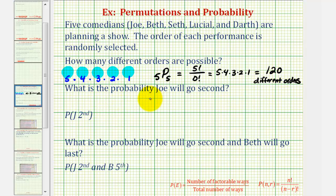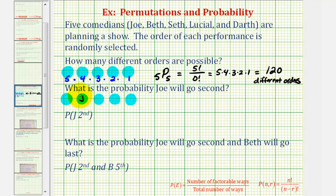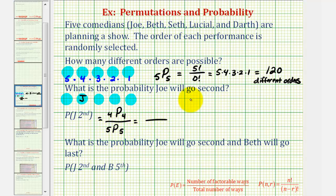For the second question, we want to know what is the probability Joe will go second. To find the probability, we find the number of favorable ways this can occur and divide by the total number of ways we can order the comedians. If there are five positions to fill and we want Joe to be second, there are only four remaining positions to fill. The favorable number of ways would be four permute four, divided by the total number of ways — which we already know is 120, or five permute five.